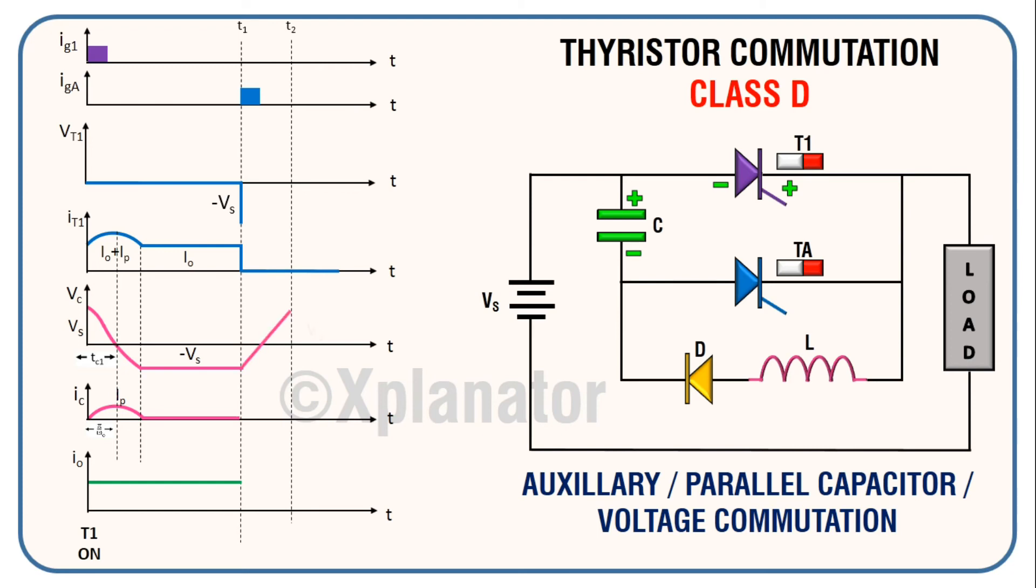The capacitor goes to zero from minus VS and charges towards plus VS. The growth of voltage is linear. If you observe, when T1 turns off, it is in parallel across the capacitor, so voltage across T1 will have same pattern as that across the capacitor.